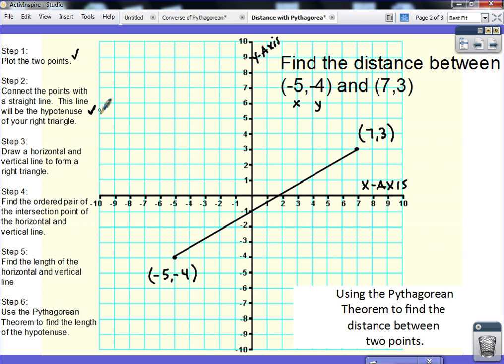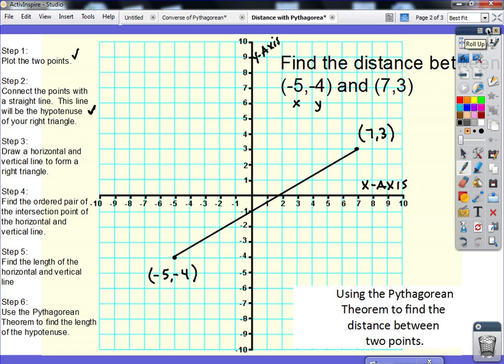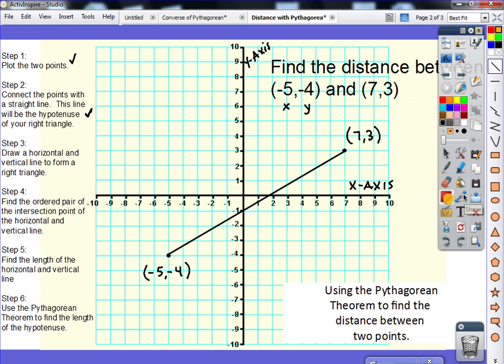Step 3, draw a horizontal and vertical line to form a right triangle. There's actually two ways to do this, I'll just quickly show you both. One option would be to start from this point right here, and go up far enough, so that whenever we start with this point over here, and head to the left, those two lines intersect.